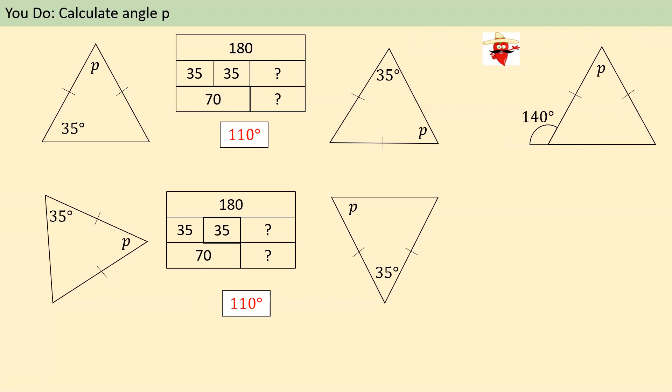Now, the third one is where you can capitalize on where I said you don't necessarily need a bar model for all of these, because if you notice, 35 degrees and P are the two equal angles. So we immediately already know that P must be 35 degrees.